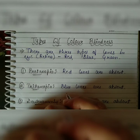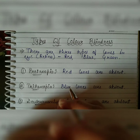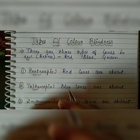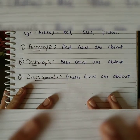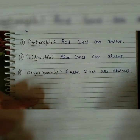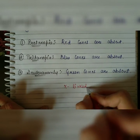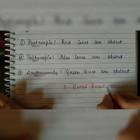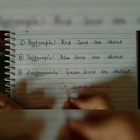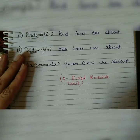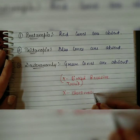Hello friends, welcome to Biotech World. In today's video we will see types of color blindness. In the previous video we covered what color blindness is — let me give a brief explanation again. Color blindness is an X-linked recessive disease, a recessive trait. The gene for color blindness is present on the X chromosome.